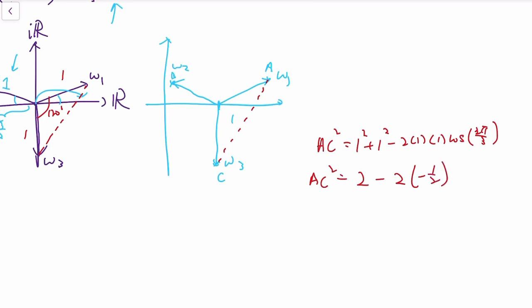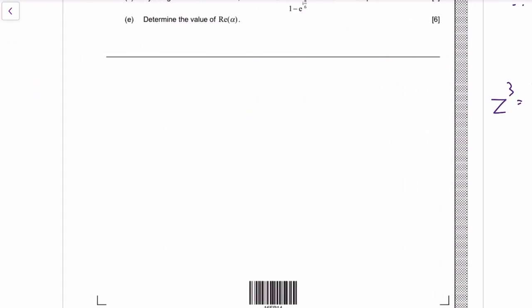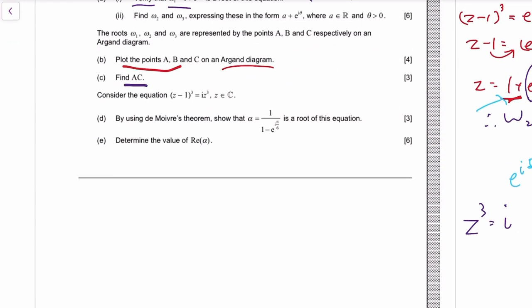Two cosine 120 is negative a half, and then we have 2 plus 1, so AC is root 3.